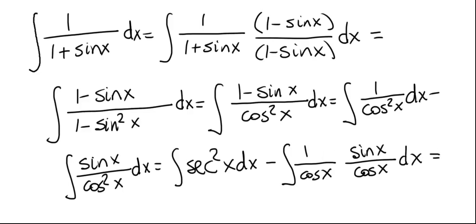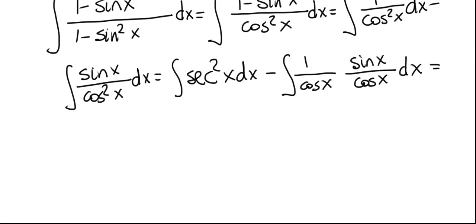But the reason we want to write it this way is because we can express the second integral as, well, the first integral is still secant squared x, and the second integral, 1 over cosine, that's secant of x, sine x over cosine of x, that is tangent of x.